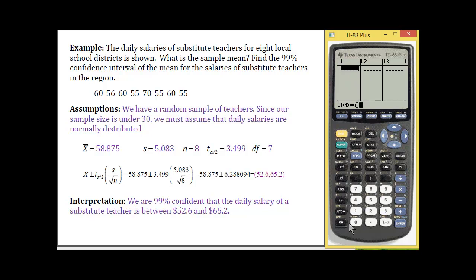So I've got 60, enter 56, 60, always check yourself, 55, 70, another 55, 60, and 55.